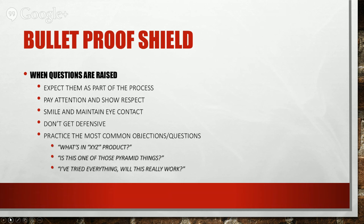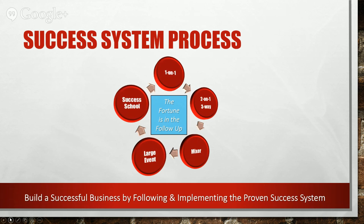The Success System goes from a one-on-one — just you meeting your prospect and sharing your story — then moving to a two-on-one or three-way call with your sponsor, then to a mixer, then to a large event or business opportunity meeting with local distributors, and then to Success School. You can build a very powerful, lucrative business implementing the Success System.